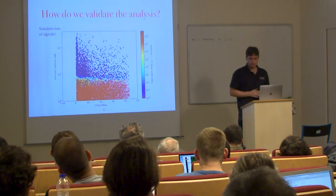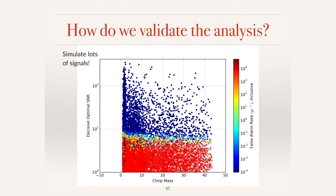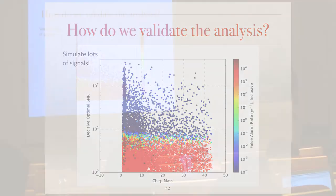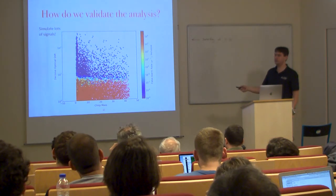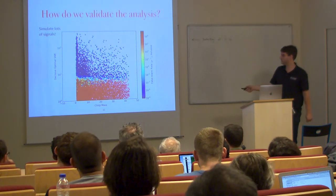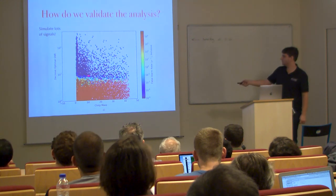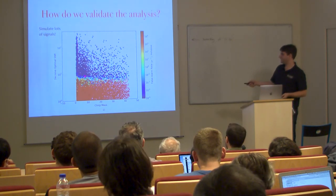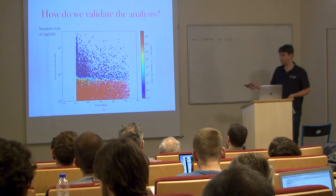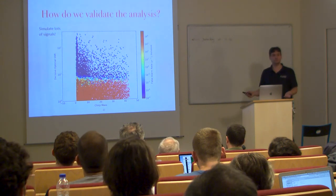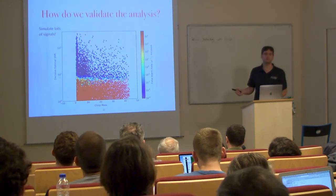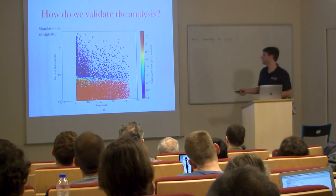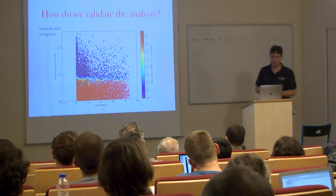To validate the analysis, we simulate lots of signals by adding waveforms to the data and then performing a search to see if we recover them with a very low false alarm rate. Plotting chirp mass versus signal-to-noise ratio in the least sensitive detector: dark blue means a clear detection, red means missed, and there's a fuzzy region of sub-threshold events. There's a clear transition between where we see nothing and where we see everything, confirming that our steep background falloff and our signal-artifact discrimination are working as expected.